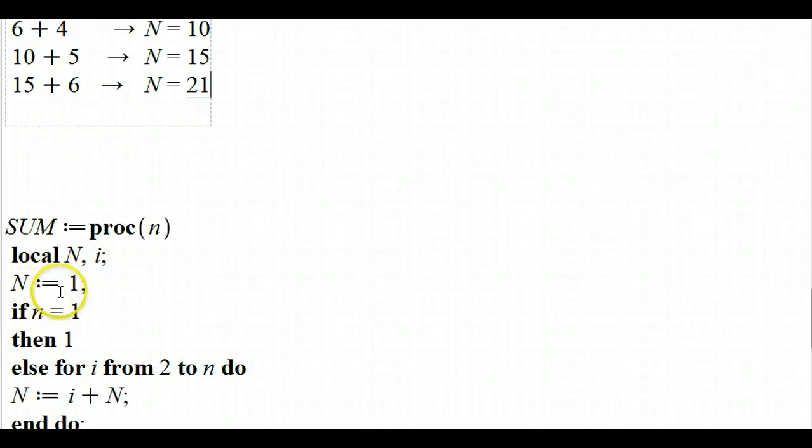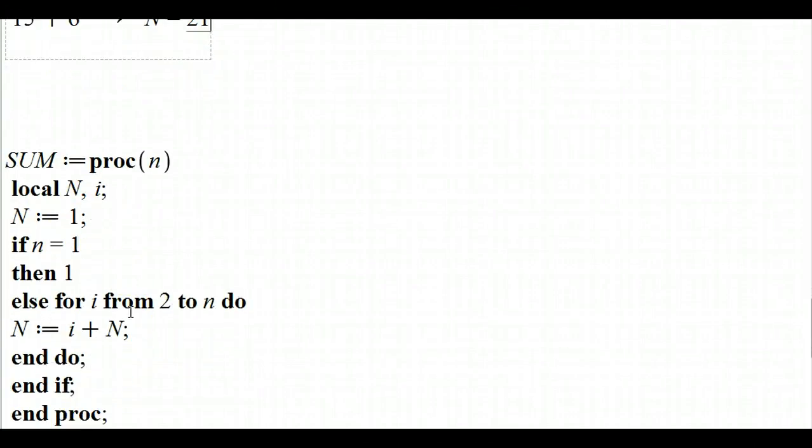Now this is a little bit more confusing than the previous other couple, because we have to write these clauses out. So if n is equal to one, we want the procedure to stop. Well then we're going to output the number one, we're just going to stop.